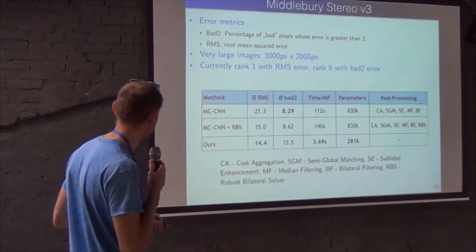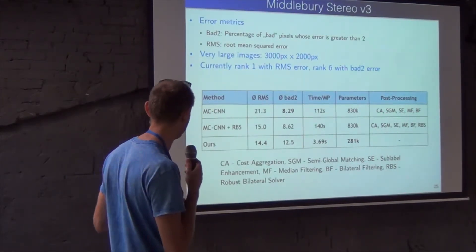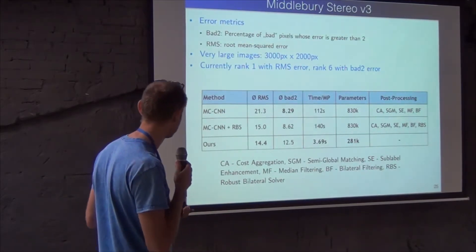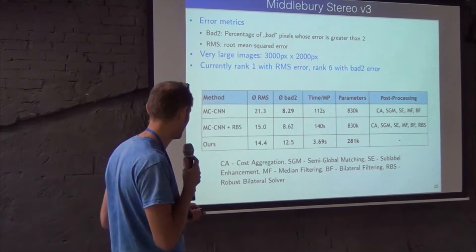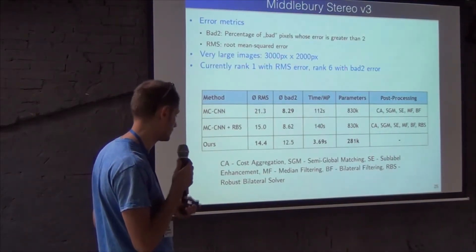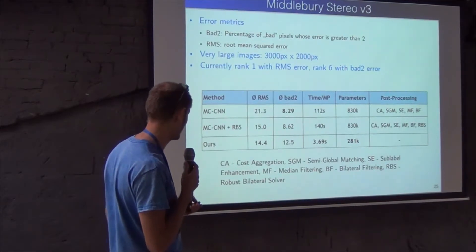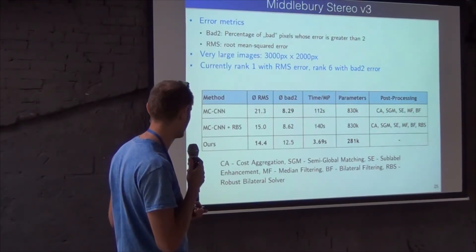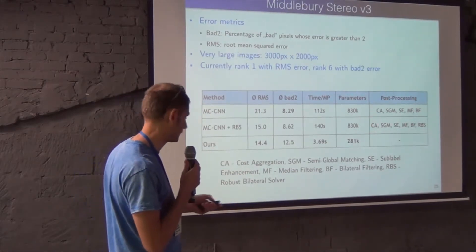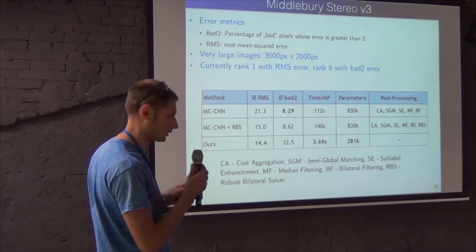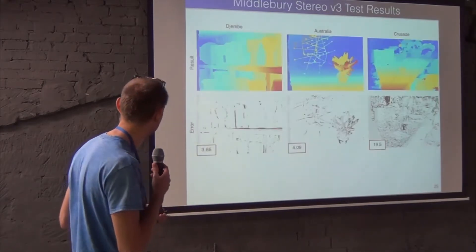I am not the one who is doing all these experiments, but guys say that we are currently rank one on the residual means square error in the Middlebury benchmark. And unlike the competitive methods, we are not doing any post-processing. So it is just the long descriptors and the optimization with long parameters. But nothing of this cost aggregation, semi-global matching, enhancement, median filter, bilateral filtering. So we are not doing these things that are not differentiable. The people are tuning parameters of all this stuff kind of manually to get better results.